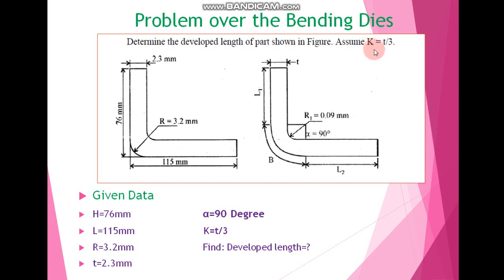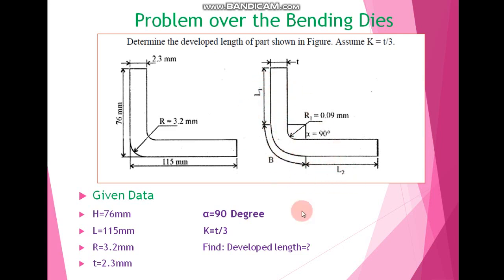The value of k is assumed as t divided by 3, where t represents the thickness of this part. We have to calculate the developed length, which means calculating the dimensions L1, B, and L2. After adding all these dimensions, we get the developed length.